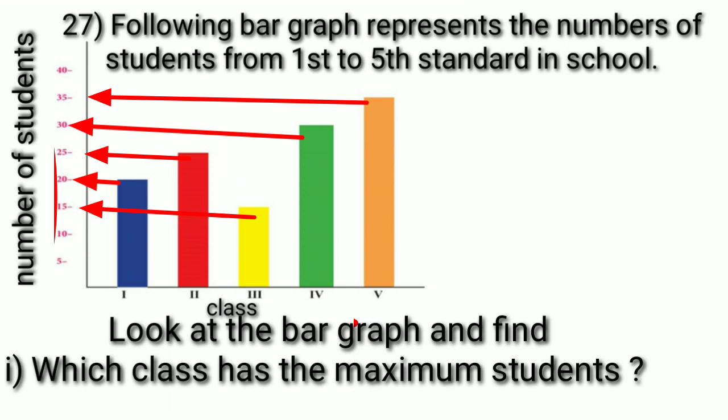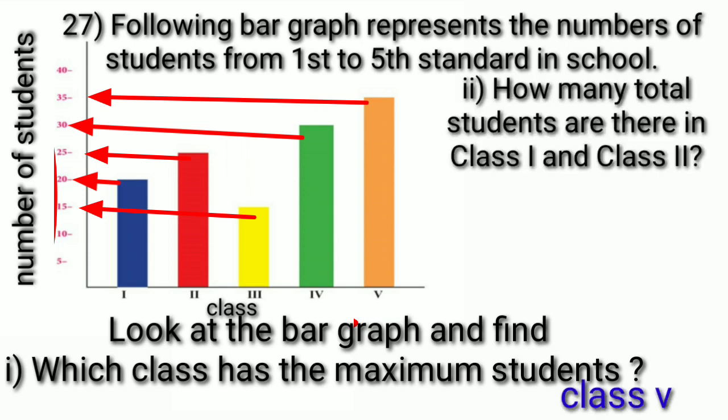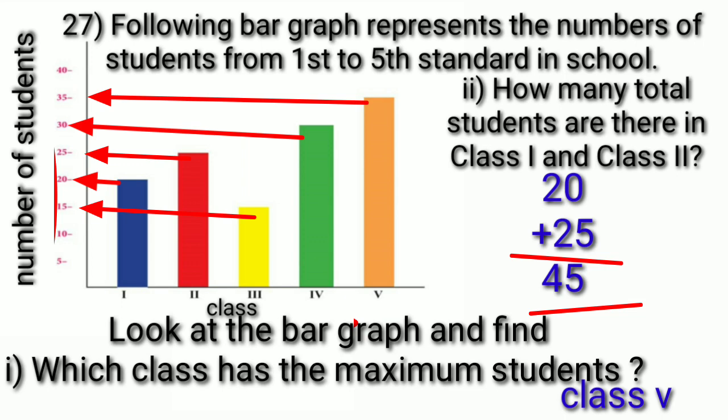So the answer to which class has the maximum students is class 5. The second part asks for the total students in class 1 and class 2. We add 20 plus 25, and the total number of students is 45.